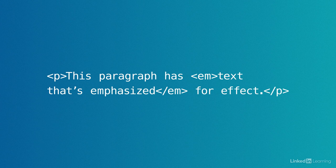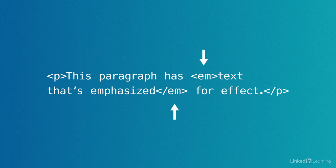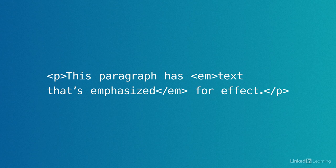Let's take a look at another example. Here we have a very short paragraph. This paragraph has text that's emphasized for effect. The whole paragraph is wrapped in opening and closing P tags, and then inside the paragraph we have another phrase — text that's emphasized — made into another element by wrapping it in opening and closing EM tags. Just notice how one HTML element can be nested inside of another. In fact, an entire HTML document is a whole bunch of HTML elements all nested inside of each other.